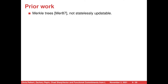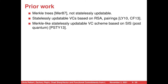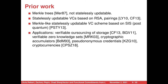As for prior work on vector commitments, one that you may be familiar with that fits the bill are Merkle trees. These provide logarithmically sized commitments and proofs for a vector of values, but are not statelessly updatable — in order to update the commitment, you essentially have to regenerate it. Statelessly updatable VCs came onto the scene with LY10 and CF13, with constructions based on RSA and pairings, having constant size proofs and commitments. Additionally, there are Merkle-like statelessly updatable vector commitment schemes based on the short integer solution problem — a tree construction that maintains stateless updatability. There are many more schemes with applications including verifiable outsourcing of storage, verifiable zero-knowledge sets, cryptographic accumulators, pseudonymous credentials, and cryptocurrencies.